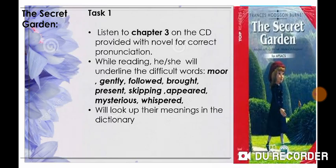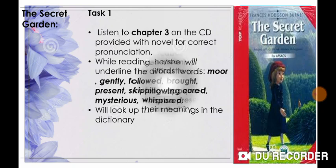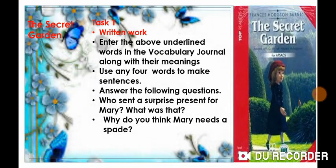After reading the chapter, you have to underline the difficult words — for example: mood, gently, followed, broad, present, skipping, impaired, mysterious, and whispered. You will look up the meanings of these words in the dictionary and enter them in the vocabulary journal along with their meanings. Then you will use any four of these words to make sentences of your own. When making sentences, try to make your own sentences rather than copying them from the book.